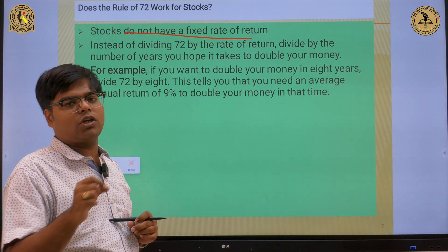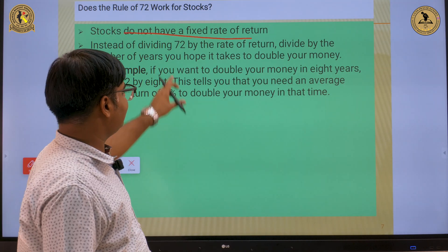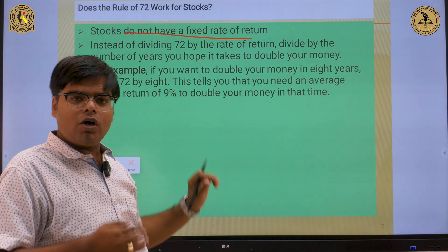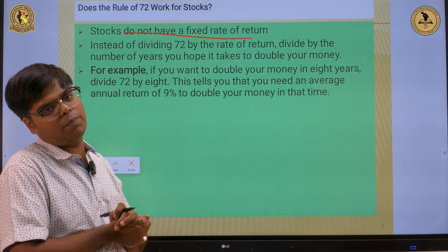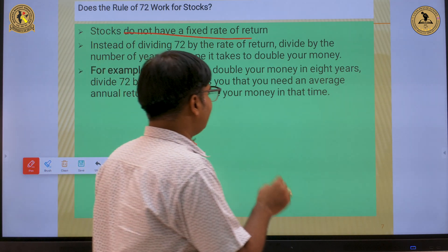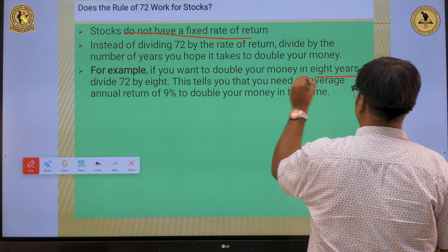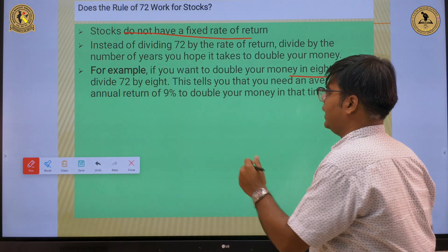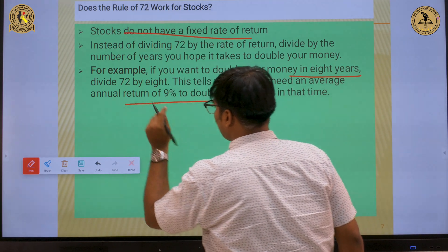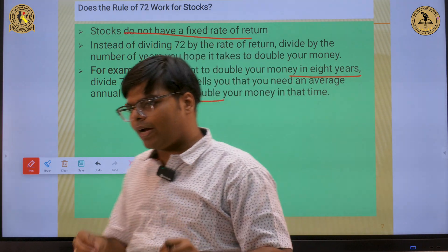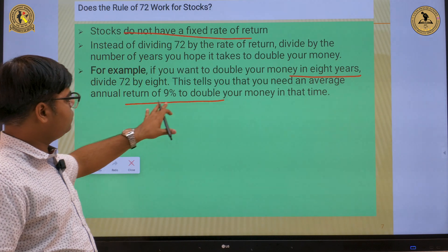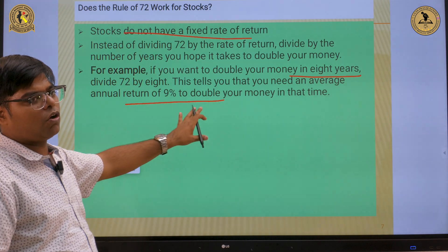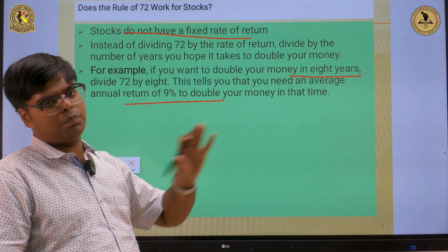We can compute the expected rate of return by dividing 72 by the number of years in which I wish to double my money. Which means if I wish to double my money in 8 years, then we can apply this 72 divided by 8. So I must look for those shares or those financial instruments which will generate an expected rate of return of 9% per annum.